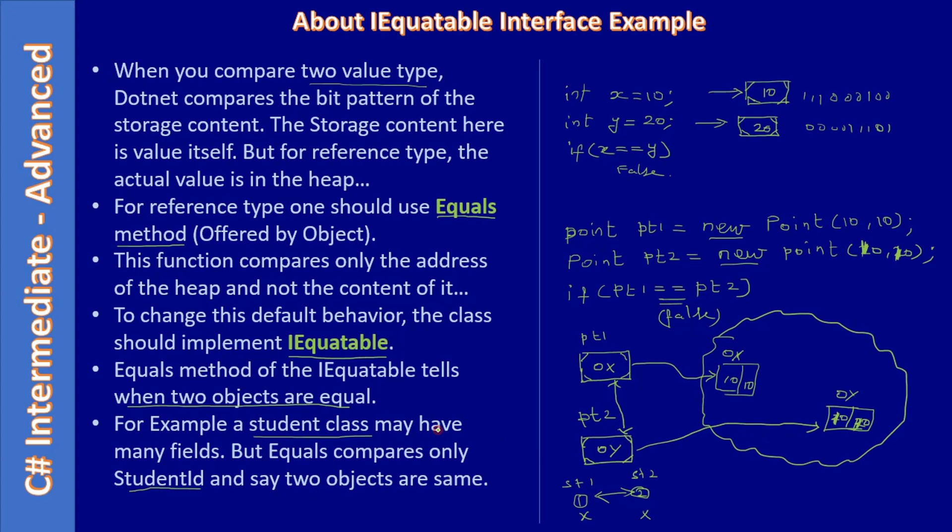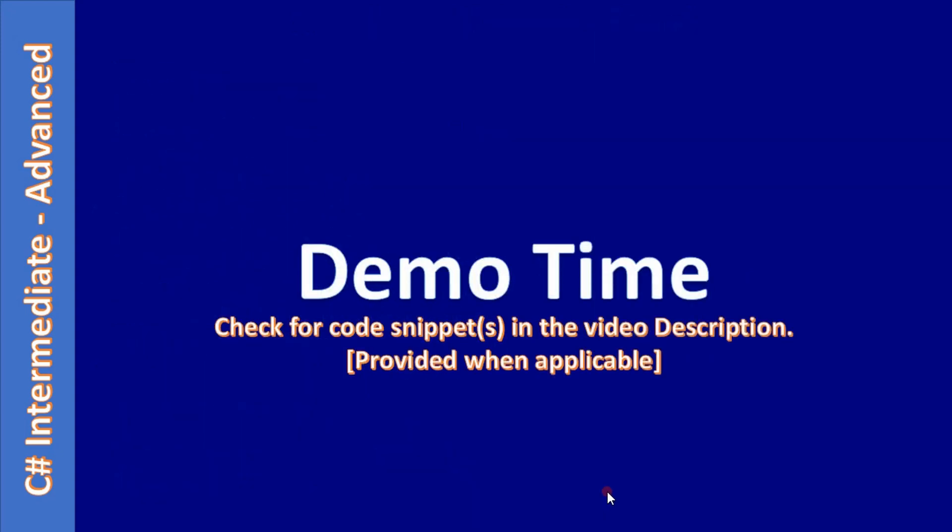So when we are overriding the Equals method, we will compare only the student ID. All right, there is no demo here. That's all for this video. Thank you for watching, bye.